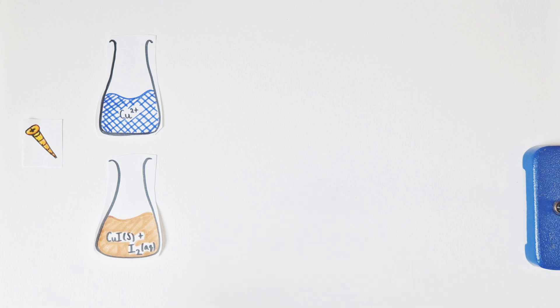That reaction would form copper iodide solid and iodine, and that mixture of a white precipitate and a brown solution would form a murky brown suspension, which is what we're going to then titrate against.